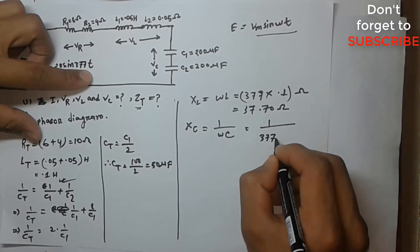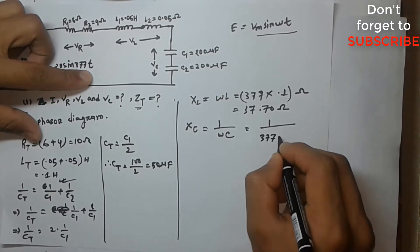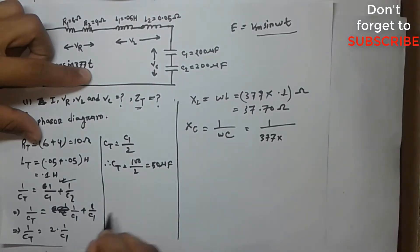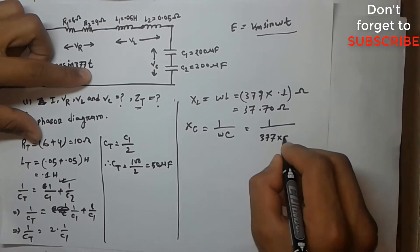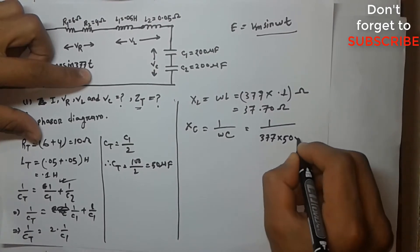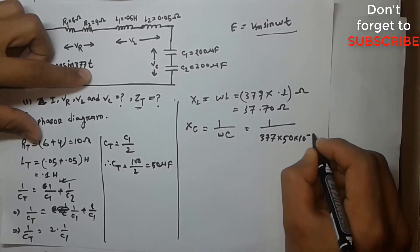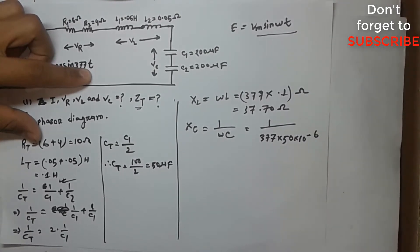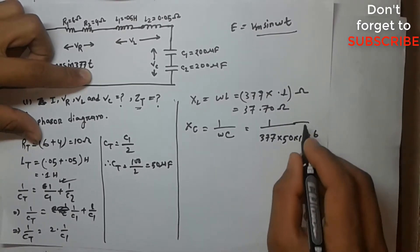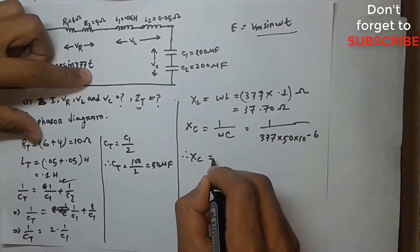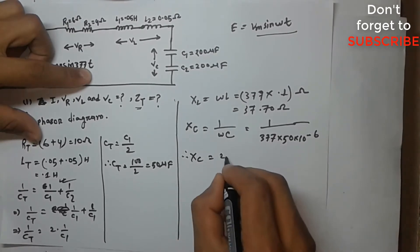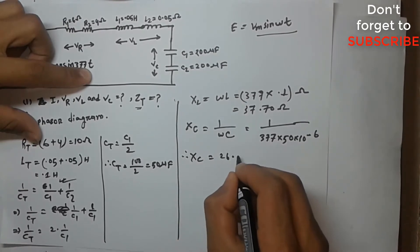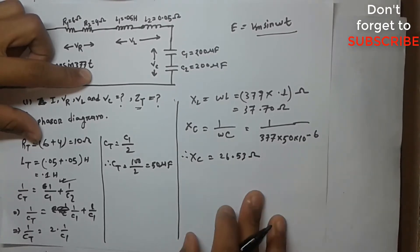The capacitive reactance is 1 divided by omega C. Using omega into C with 55 microfarad equal to 10 to the minus 6, we get XC equal to 262.53 Ohm.